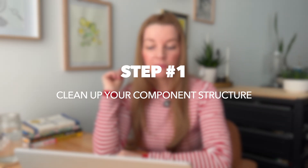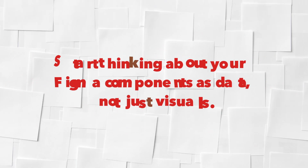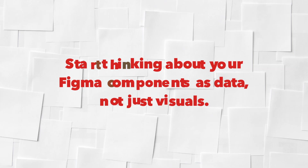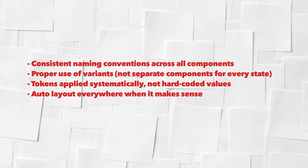So what do you need to do right now? MCP is still emerging, but either way you can prepare your workflow today. I have four steps you can start doing right away. Step one: clean up your component structure. Start thinking about your Figma components as data, not just visuals — consistent naming conventions across all components, proper use of variants, tokens applied systematically rather than hard-coded values, and auto layout everywhere when it makes sense.